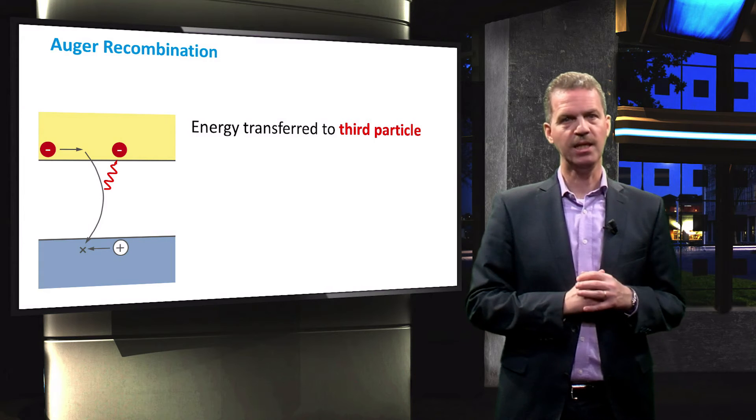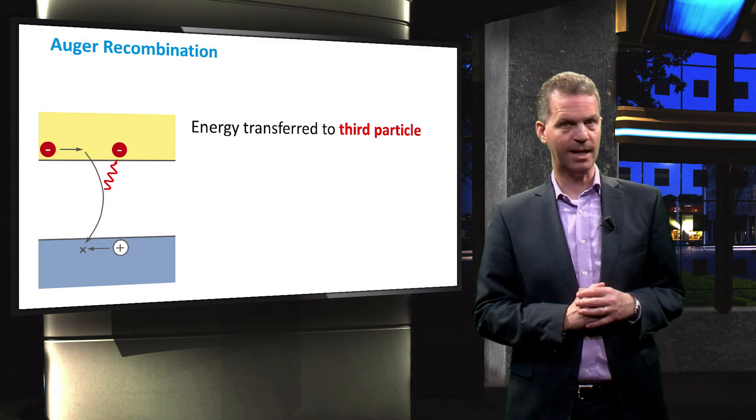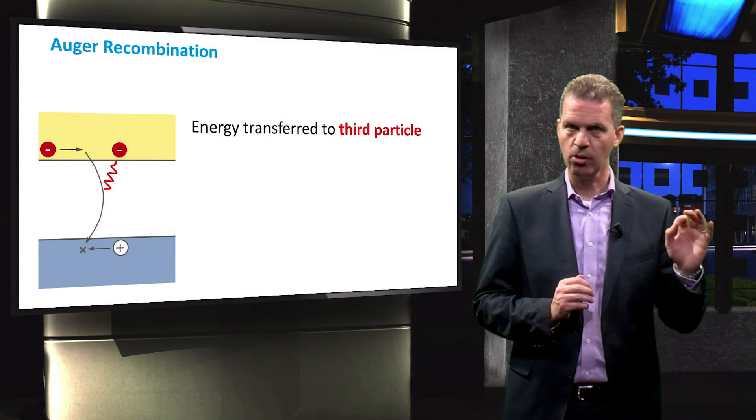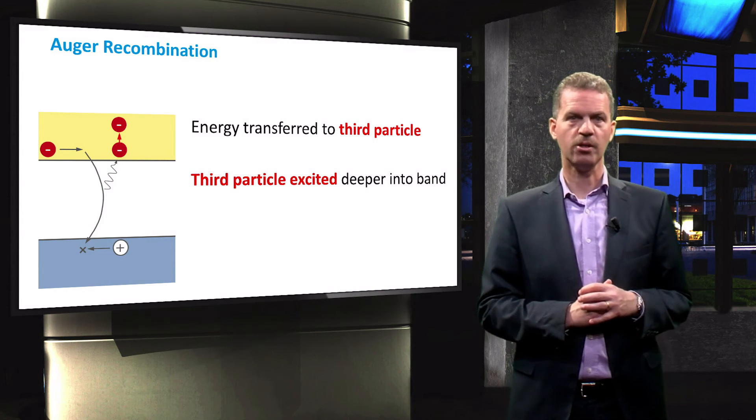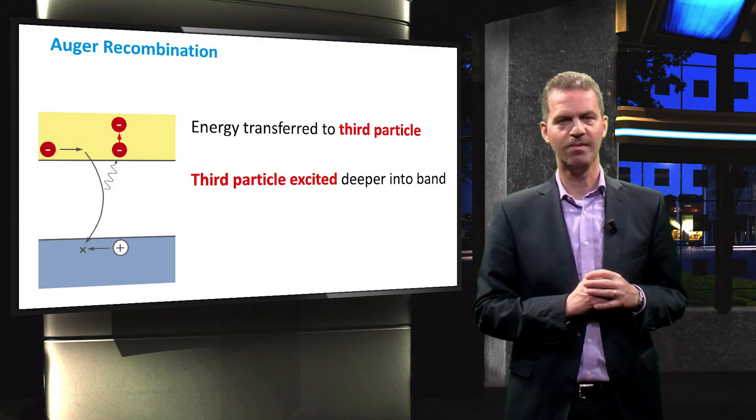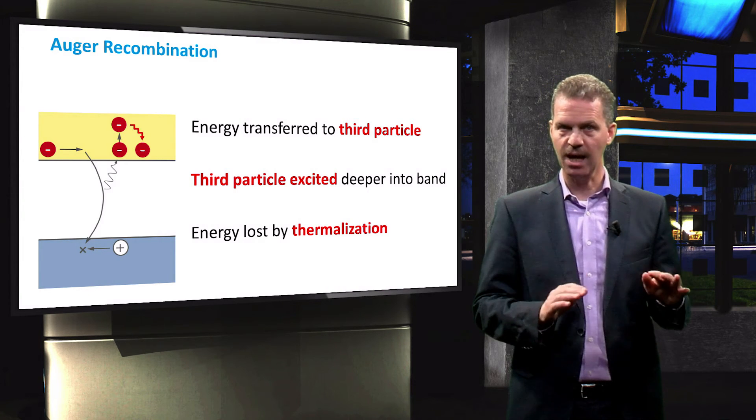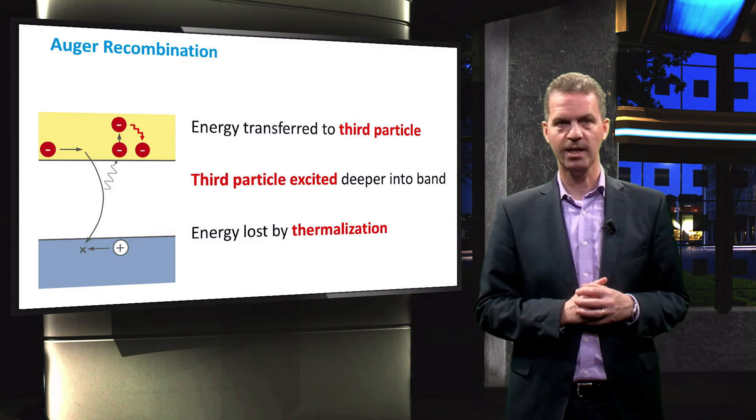The momentum and energy of the recombining hole and electron are transferred to another electron or hole. This third particle is excited deeper into the respective band and relaxes again by a process called thermalization.